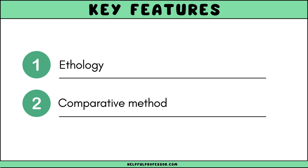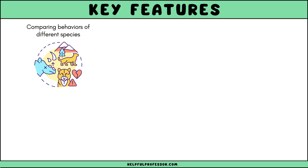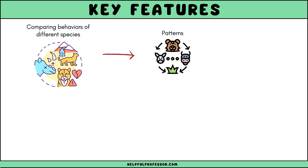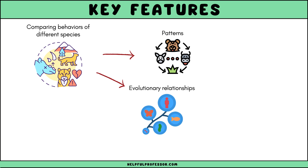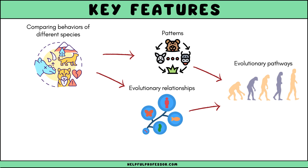The second key concept is the comparative method. This involves comparing the behaviors of different species to identify patterns and determine the evolutionary relationships among them. By examining similarities and differences in behavior, researchers can infer the evolutionary pathways that have shaped these behaviors, helping to understand how certain traits have evolved in response to environmental pressures.